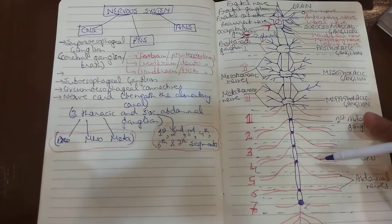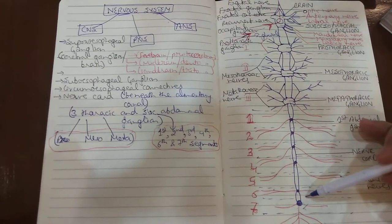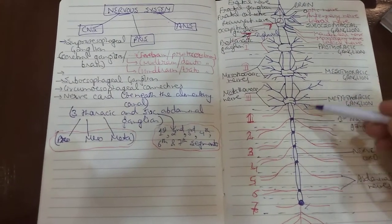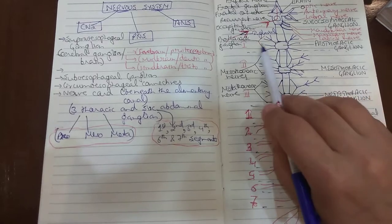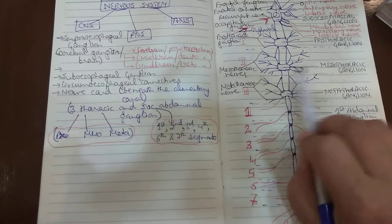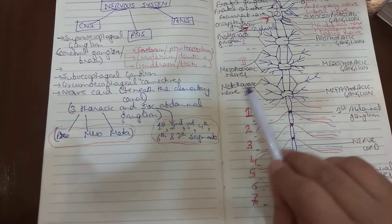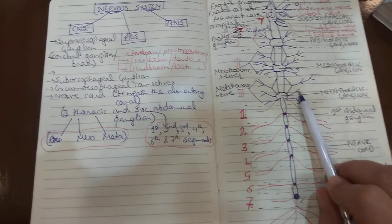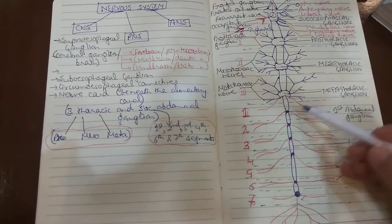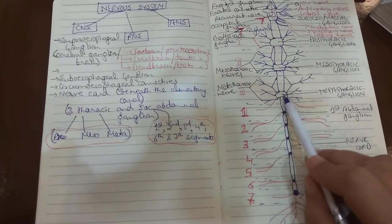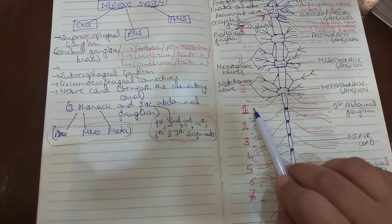Then come the segmental ganglia — the ganglia present in each segment of the thorax and abdomen region. They give several pairs of nerves to different segments. The prothoracic ganglion gives prothoracic nerves to the prothorax region, the mesothoracic ganglion gives mesothoracic nerves to the mesothorax region, and the metathoracic ganglion gives rise to metathoracic nerves to the metathoracic region. Apart from this, the metathoracic ganglion also gives a nerve to the first abdominal segment.